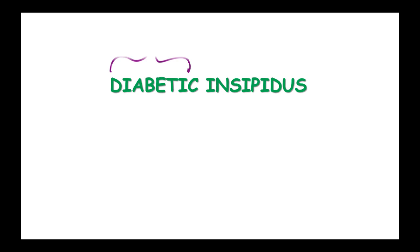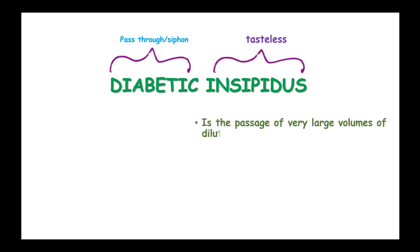Diabetes insipidus: diabetes means to siphon or to pass through, and insipidus means tasteless. So there is something tasteless that is passing through. Diabetes insipidus means the passage of very large volumes of dilute urine. So this dilute urine is tasteless.